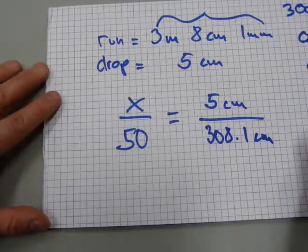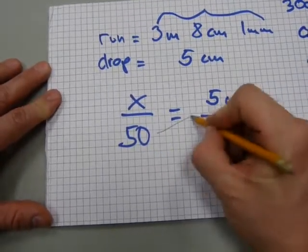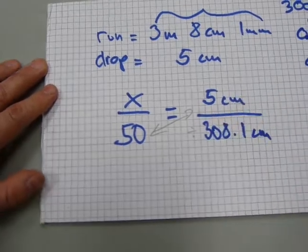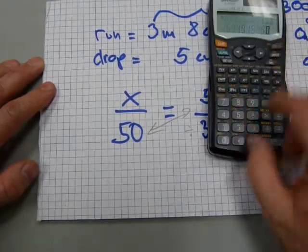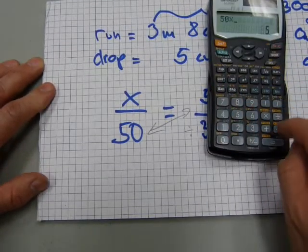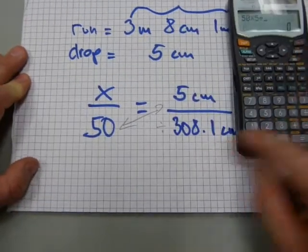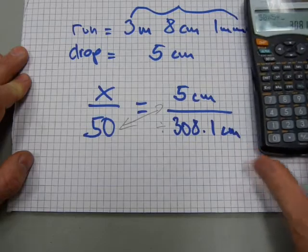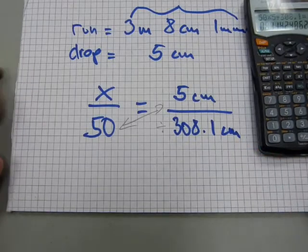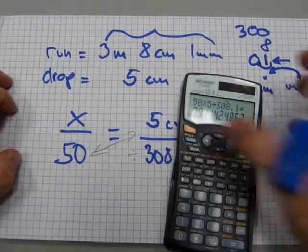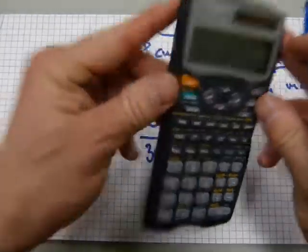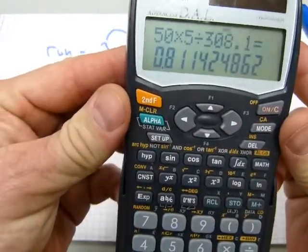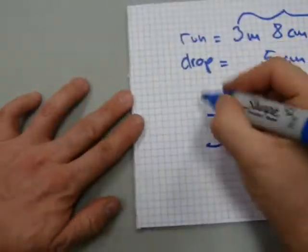And let's do some cross-multiply standard procedure. And then divide. 50 times 5 divided by that number, that 308.1 equals 0.8. Can you guys see it? A little bit of glare on it. That should work. 0.8 is close enough for x. 0.8.